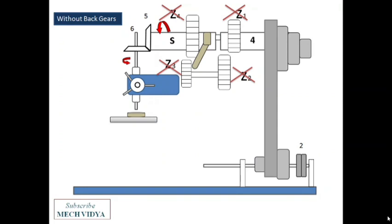Different speeds can be obtained by shifting the belt from one step to the other. Thus, 4 different speeds can be obtained with back gears in as well as 4 different speeds can be achieved by back gears out. So total we are getting 8 different speeds on this machine.